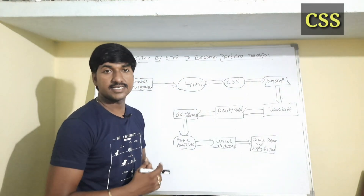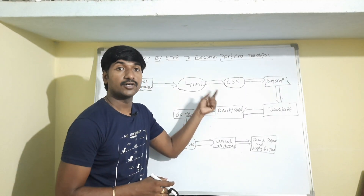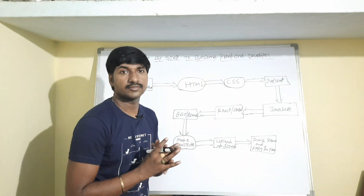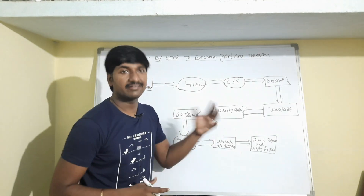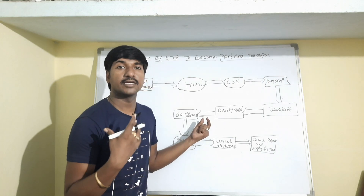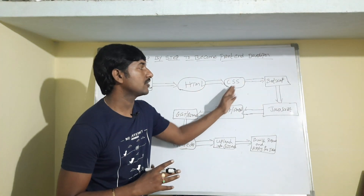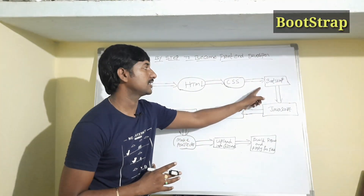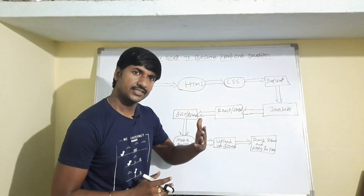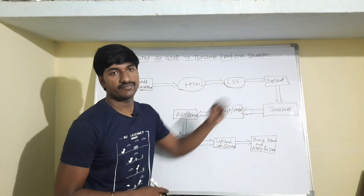After learning HTML, you have to learn CSS — Cascading Style Sheets. CSS is used to apply colors, fonts, positions, margins, and borders to make a website feel attractive. After learning CSS, you have to learn one CSS framework — Bootstrap. If you learn the Bootstrap framework, it becomes very easy to apply HTML and CSS concepts.